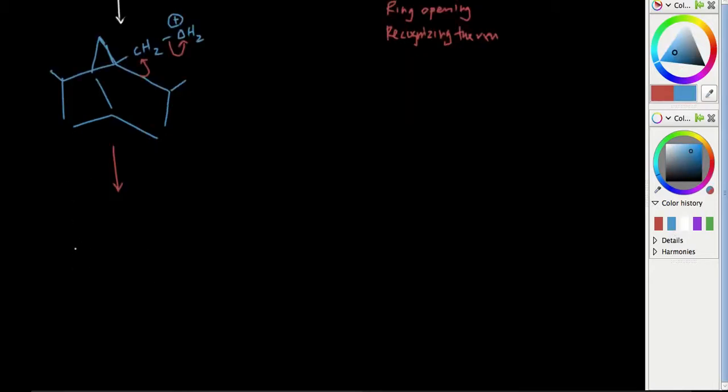Whenever we do a ring opening, I prefer you guys to first draw the structure as it was before any change, and the bond that you're changing or the bond that you're moving, just don't write that in until you draw the structure as it was, CH2.